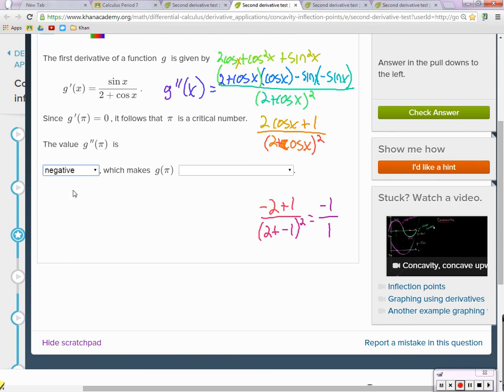So it's negative, so it's concave down. We have a zero slope, so it must be a maximum.